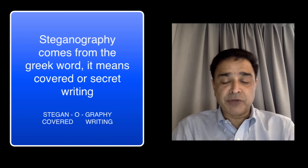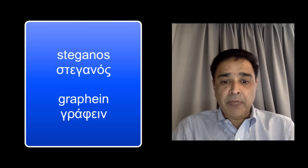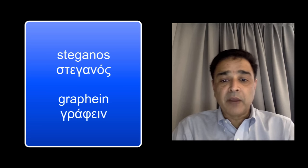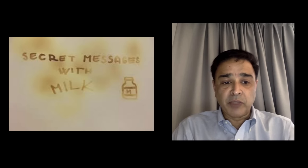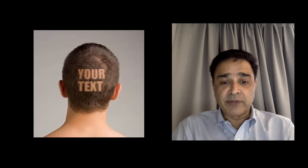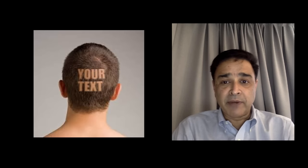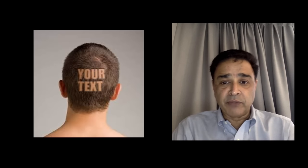Steganography is an ancient technique that goes back thousands of years and is as primitive as secret communication systems. In the early part of the first century, Pliny the Elder described how milk from a certain plant could be used as an invisible ink. Another ancient technique from Greece involved shaving a messenger's head and writing a message on the scalp, then waiting for the hair to grow before sending the messenger to the destination.